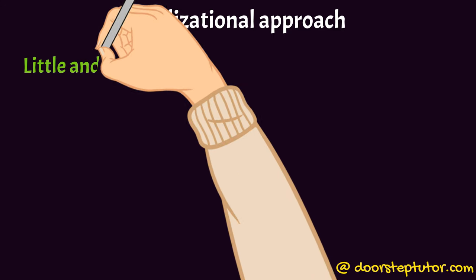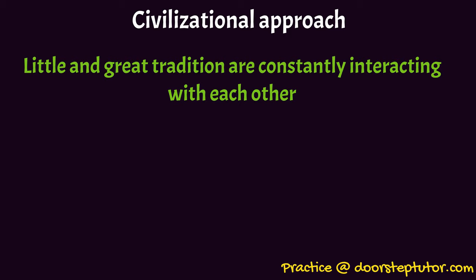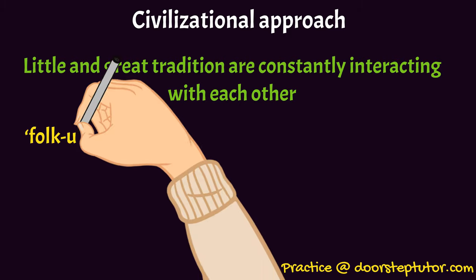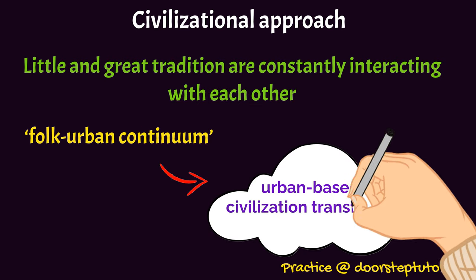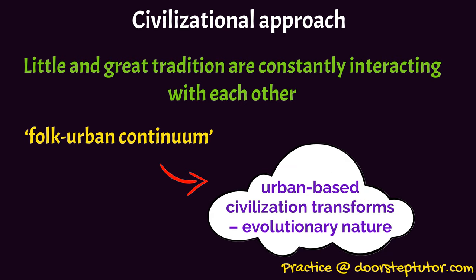Little and great traditions are constantly in touch with each other; they are always interacting. This is what is known as the folk-urban continuum, where the urban-based civilization transforms in an evolutionary nature. When the little tradition transforms into a great tradition, it happens because of some kind of interaction between the two. For example, if you visited a village 20 years ago and visit it today, you will see a contrasting difference — in people's attitudes, infrastructure, technology available, and facilities available.